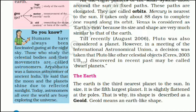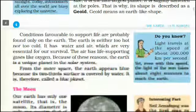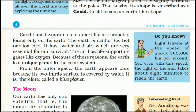The Earth: The Earth is the third nearest planet to the sun. In size, it is the fifth largest planet. It is slightly flattened at the poles. That is why its shape is described as a geoid — geoid means an Earth-like shape. Conditions favorable to support life are probably found only on the Earth. The Earth is neither too hot nor too cold. It has water and air, which are very essential for our survival. The air has life-supporting gases like oxygen. Because of these reasons, the Earth is a unique planet in the solar system. From outer space, the Earth appears blue because its two-thirds surface is covered by water. It is therefore called the blue planet.